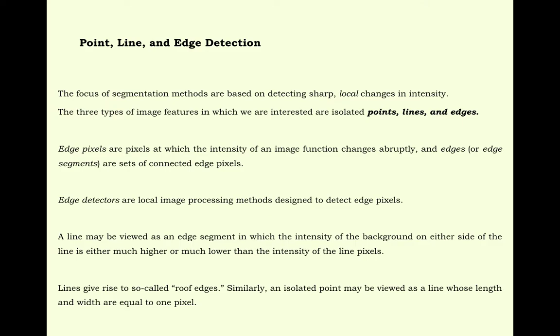The focus of segmentation methods are based on detecting sharp local changes in intensity. The three types of image features in which we are interested are isolated points, lines and edges. Edge pixels are pixels at which the intensity of an image function changes abruptly and edges or edge segments are sets of connected edge pixels.